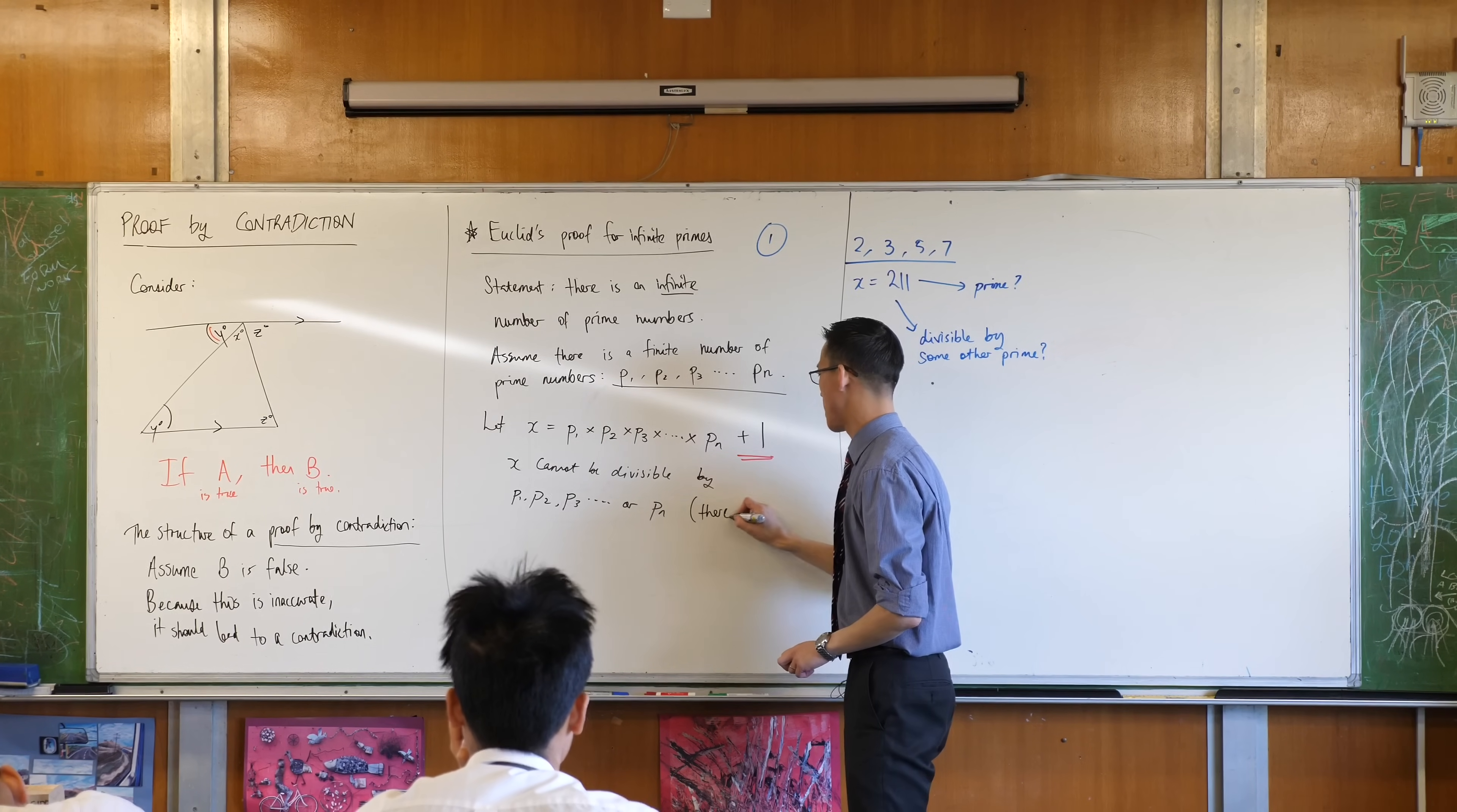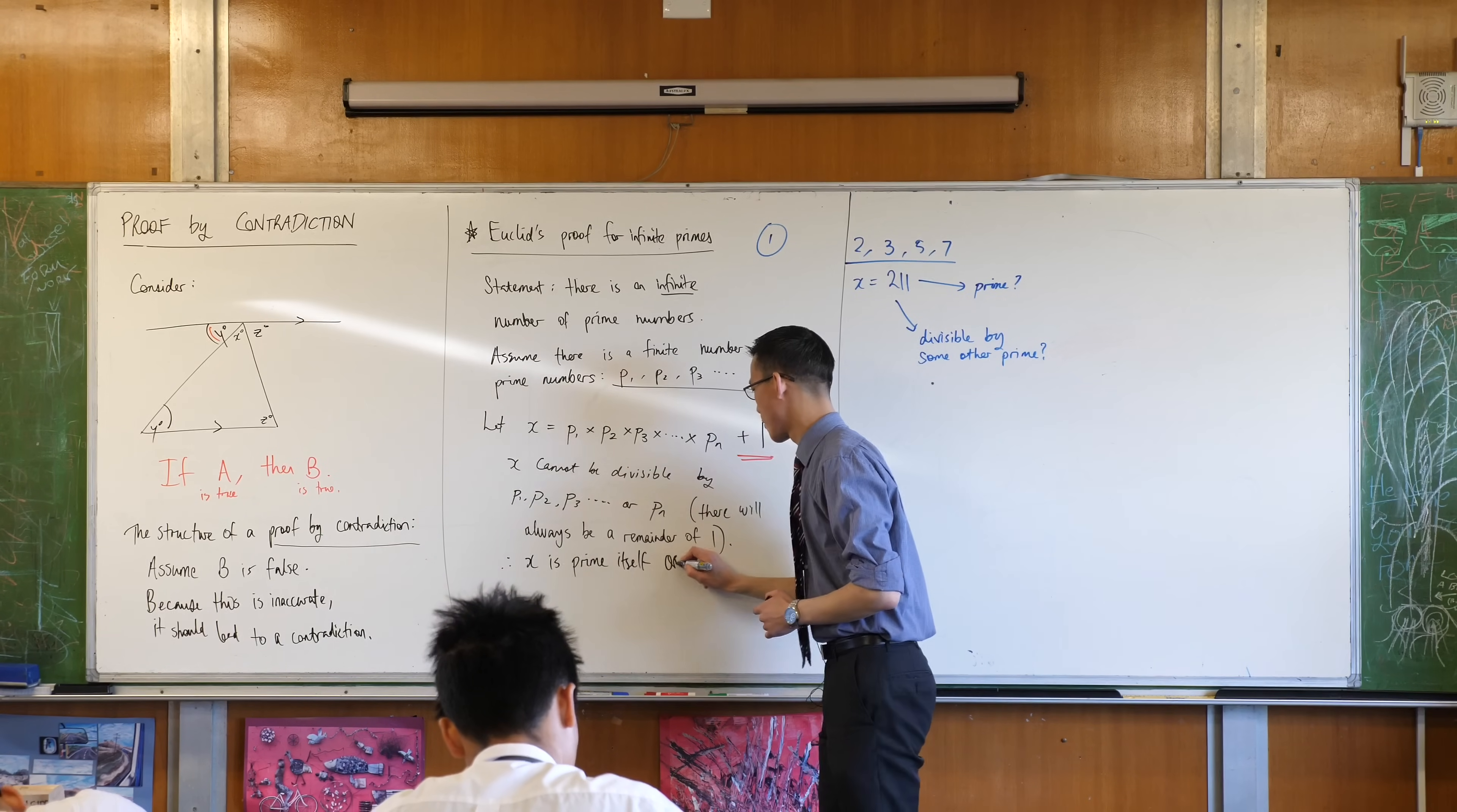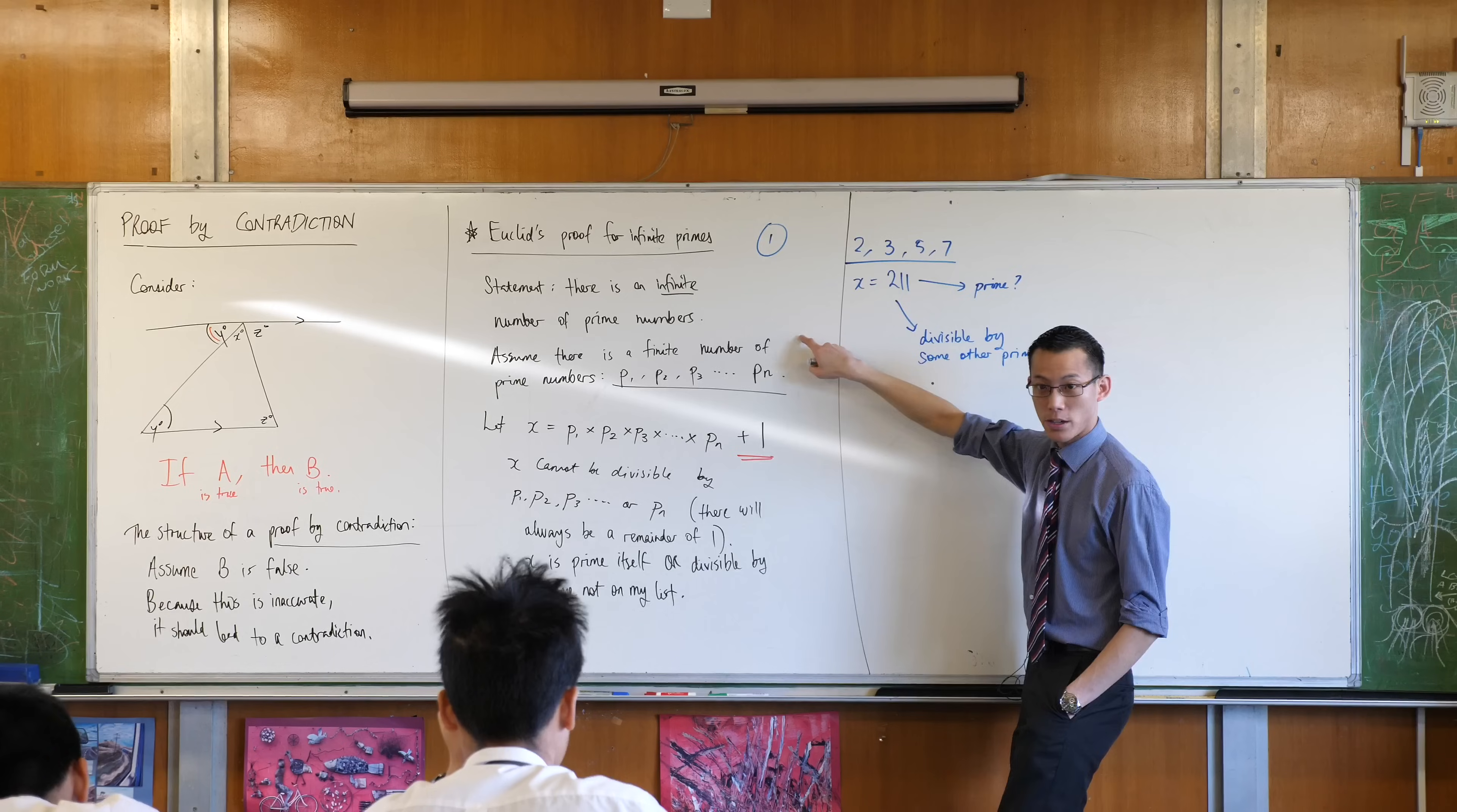In fact, this is something we can say. There will always be a remainder of 1, okay? Therefore, x is one of these two possibilities, right? Is either a prime number itself or divisible by some other prime that's not on the list. And you can see, in either of these two possible cases for 211, or whatever number x actually is because it would be much larger, obviously, whatever each of these is, my original assumption up here has just been contradicted, okay?